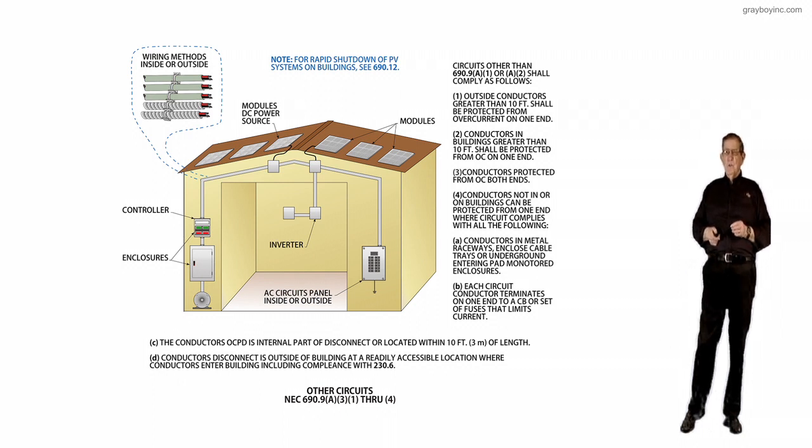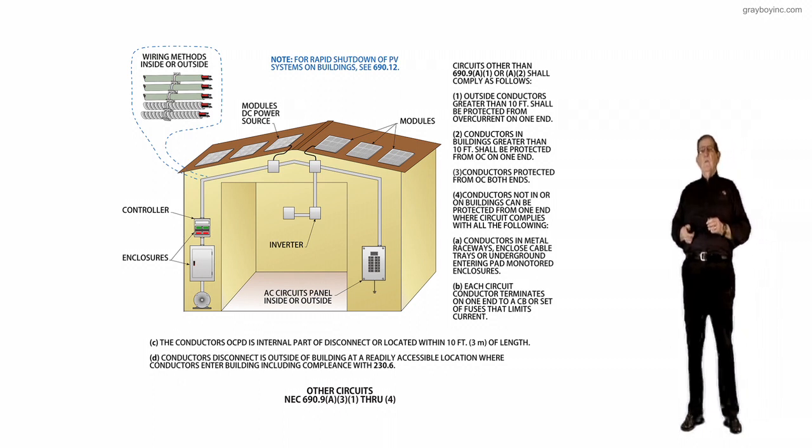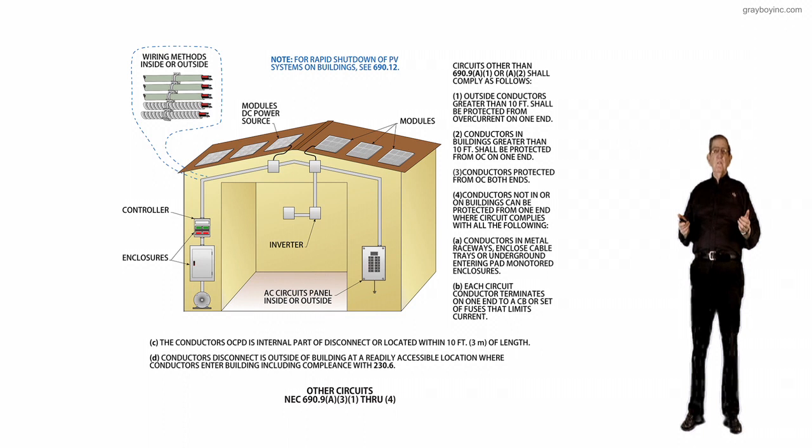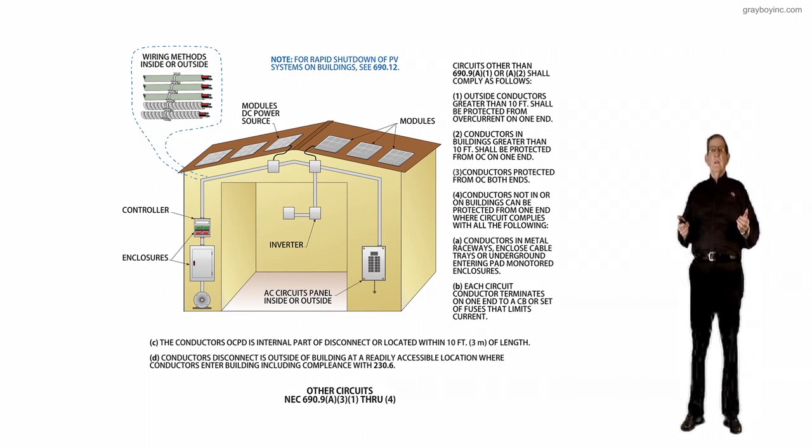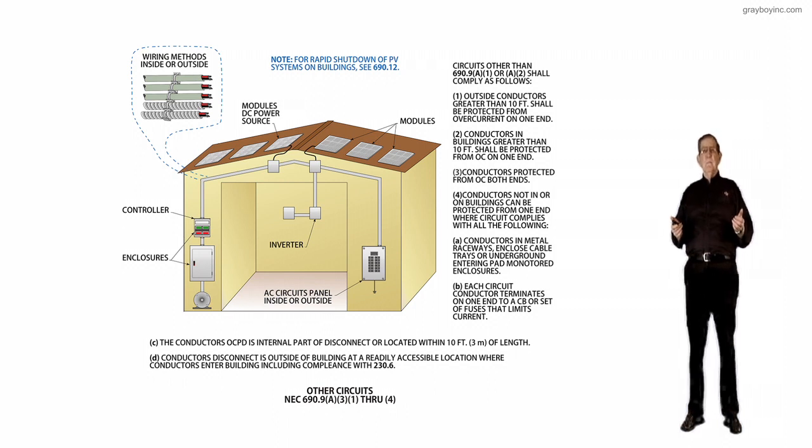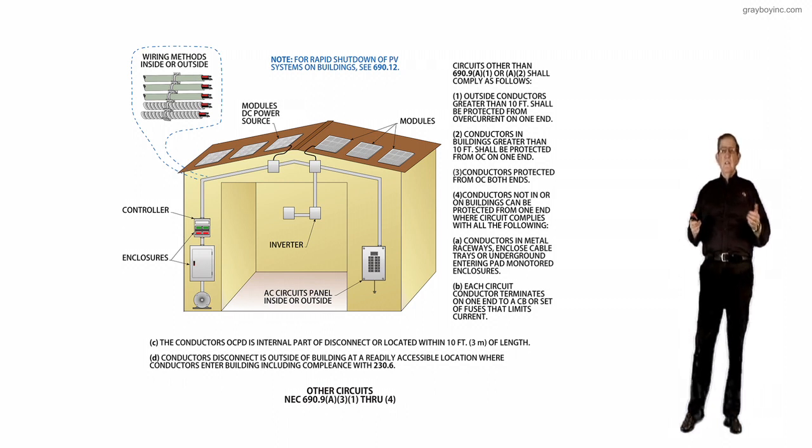And such an installation has to comply with 230.6. If you're outside the building, then you haven't entered. If you're in two inches of concrete all around the wiring method, you haven't entered the building. If you're within 10 inches of brick, you haven't entered the building.